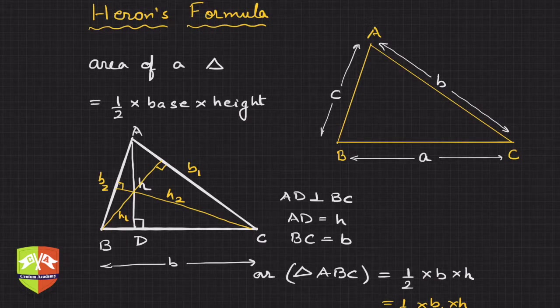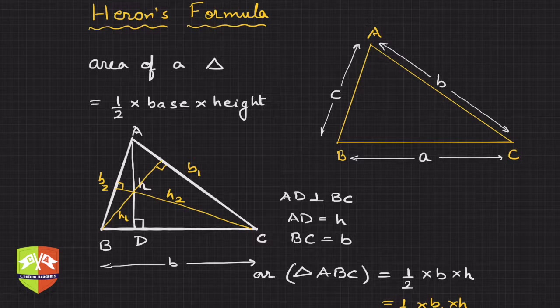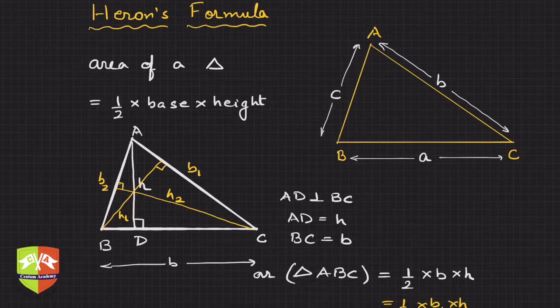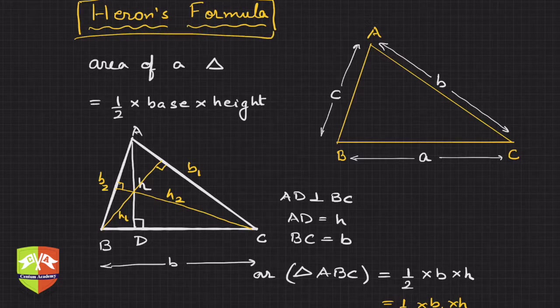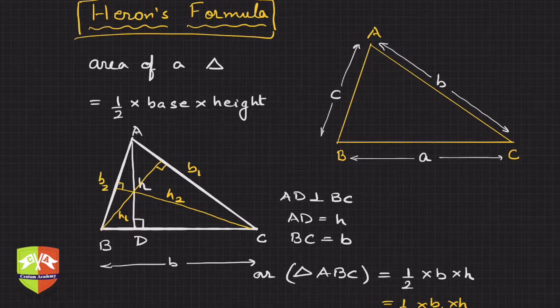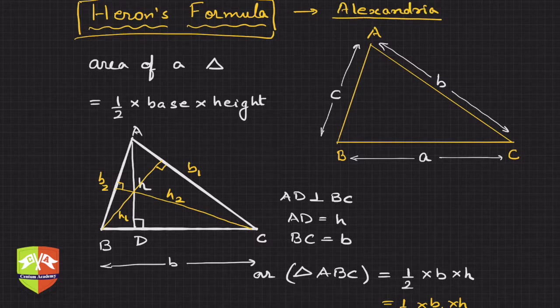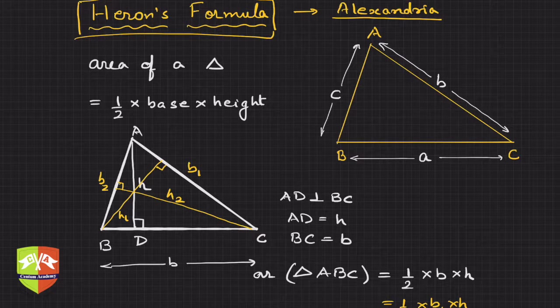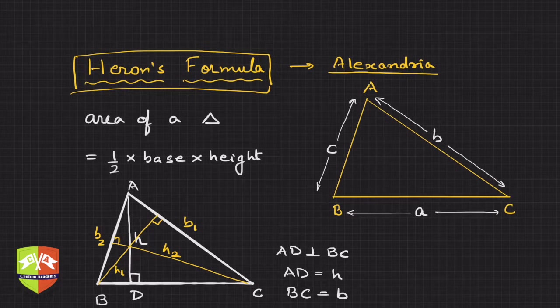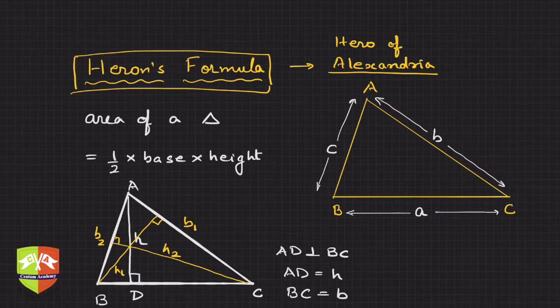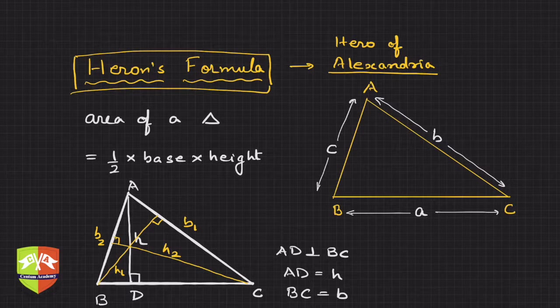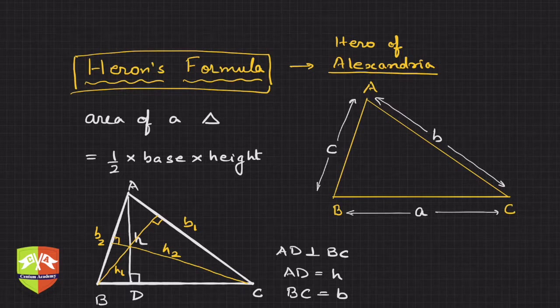But what if we do not have the length of the altitude, or instead of that we have all the three lengths? There was a guy called Heron, or actually the name is Hero. This guy was a Greek mathematician from a place called Alexandria, which is in current day Egypt in Africa. This guy was Hero of Alexandria, and he figured out this method of finding out area of a triangle which we are going to discuss now.